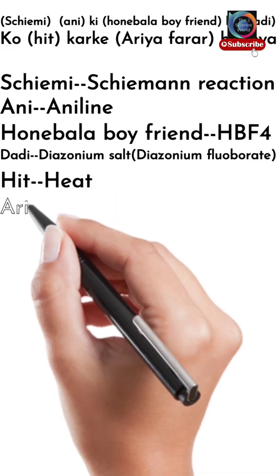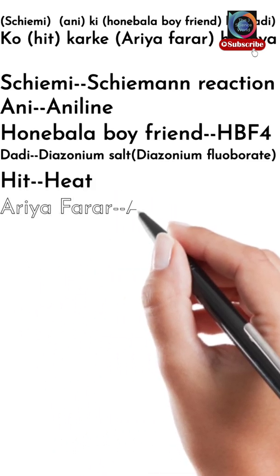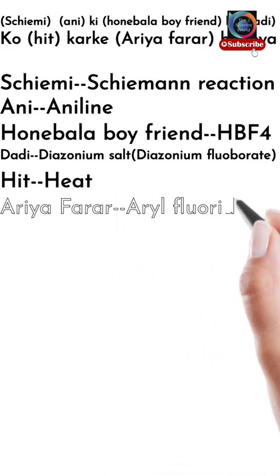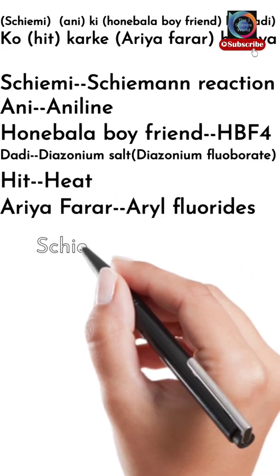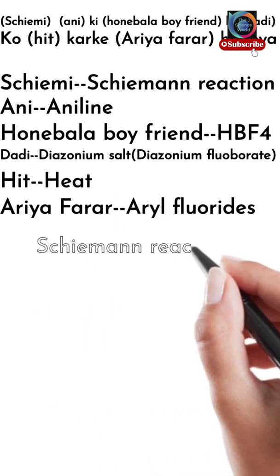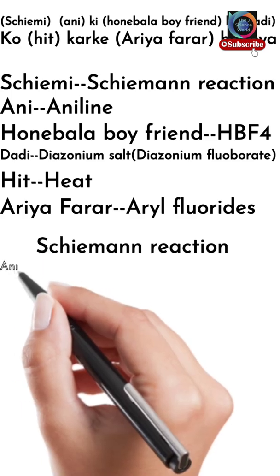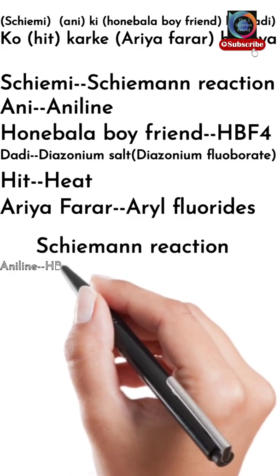In place of 'heat,' we can use also heat. In place of 'aria farar,' that is our aryl fluoride. We arrange all this sequentially, and we get the Schiemann reaction.